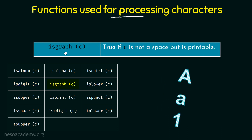Next we have ISGRAPH, which returns true if C is not a space but is printable. That means if C is not a whitespace and is a printable character then it returns true. For example, letters or numbers — whatever is printable would return true. That is the use of ISGRAPH.